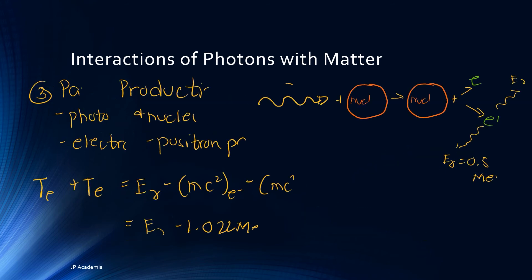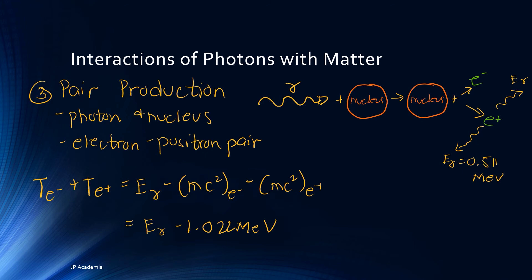We have the third photon interaction, which is pair production. It is an interaction between a photon and a nucleus. As a result, the photon disappears and an electron-positron pair appears. Although the nucleus does not change, its presence is a requirement for pair production to proceed. There is a small probability that it takes place in the field of an electron with threshold energy of about 4mc squared, that is about 2.04 mega electron volts. By conservation of energy, the kinetic energy of the electron and the positron is expressed as the photon energy minus the required threshold energy to produce this pair of masses.